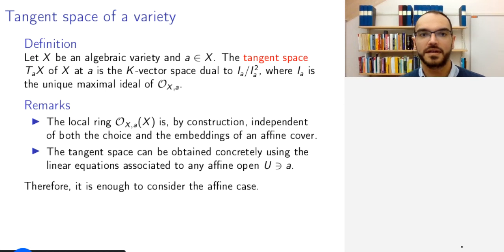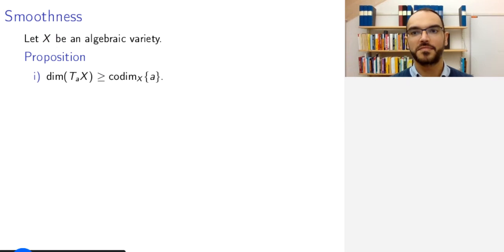So now we have defined the tangent space of a variety intrinsically and this we can use to define smoothness. First let us make an observation about the dimension of the tangent space of an algebraic variety. First the dimension of the tangent space at a point a is greater than or equal to the co-dimension of the point a in the variety X. So if X is irreducible then this is just the dimension of X.